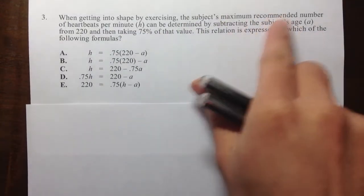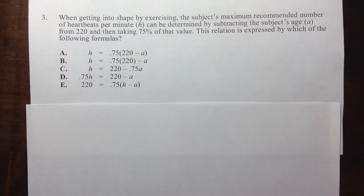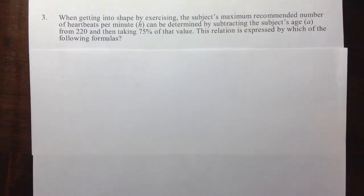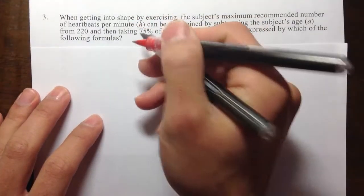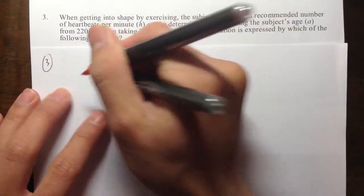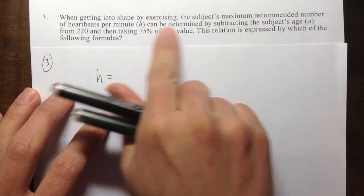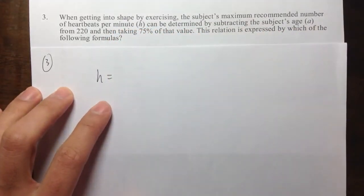And we're trying to write a formula based on this phrase, and we're finding such choices right here. So let's get to work. So the key phrase is this. First of all, we know that we're going to get H is equal to. H can be determined by doing the following operations.